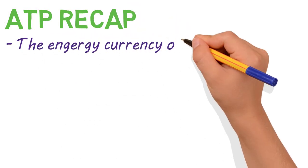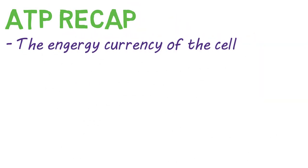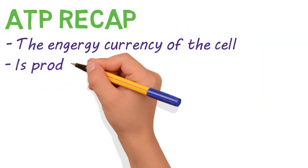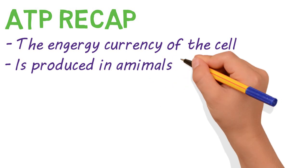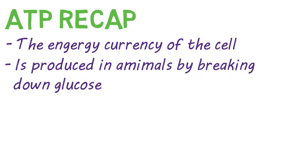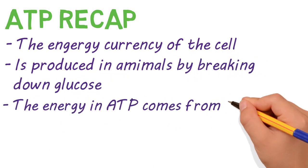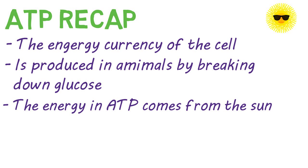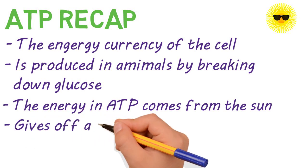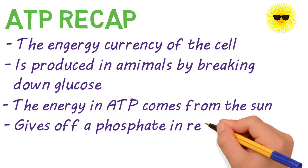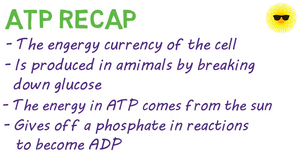Let's do a quick recap. ATP is the energy currency of the cell. It's produced in animal cells by breaking down glucose. The energy in ATP ultimately comes from the sun. And finally, ATP gives off a phosphate in chemical reactions to become ADP.